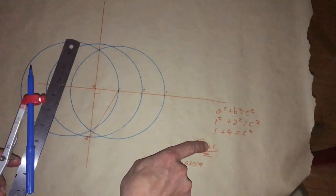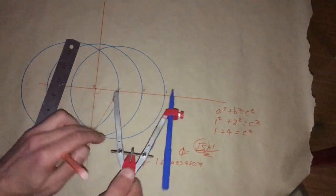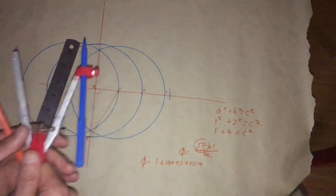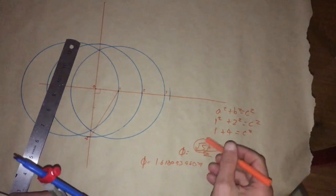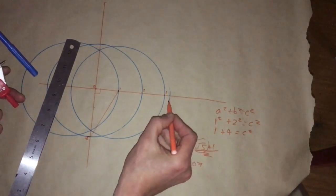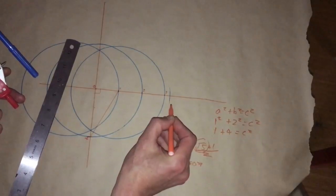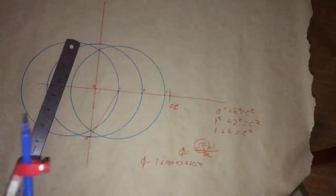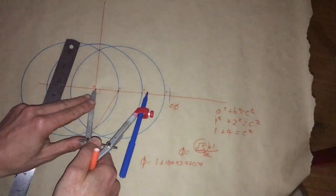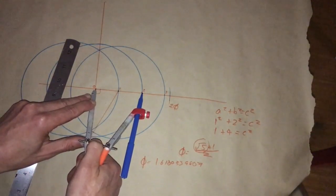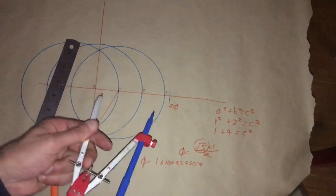Square root of 5 plus 1 over 2 is φ, so we can now mark that. So square root of 5 plus 1 divided by 2 is φ. Therefore this is 2φ. Now all we need to do is go back to our original compass setting which was set at two.